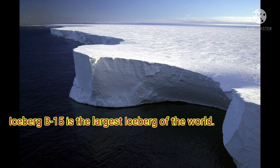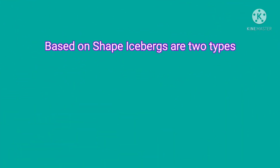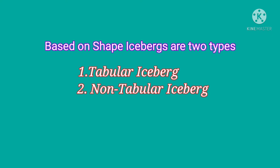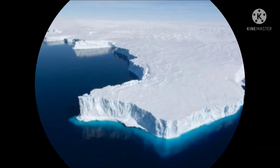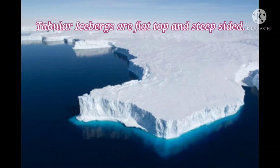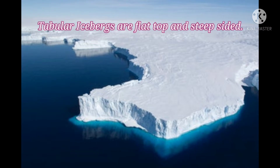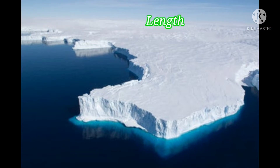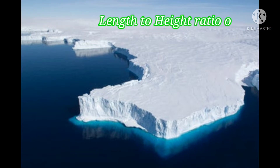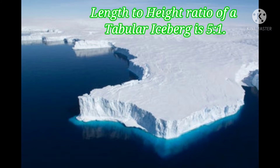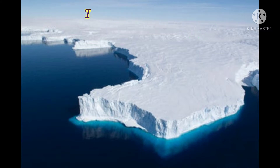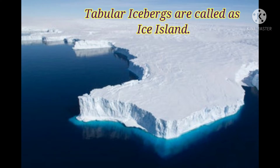Iceberg B15 is the largest iceberg in the world. There are two types of icebergs on the basis of their shapes: tabular icebergs and non-tabular icebergs. Flat-top and stiff-sided icebergs are called tabular icebergs — they are generally like a plateau. Tabular icebergs have greater length than height, with a length-to-height ratio of 5 to 1. They are known as Ice Islands.